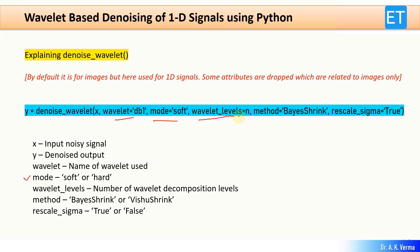The wavelet_levels parameter defines the number of decomposition levels — for example, if you set n equal to 3, there will be three decomposition levels of the discrete wavelet transform. The method parameter, which defaults to BayesShrink, is used for threshold and noise estimation; you can specify either BayesShrink or VisuShrink. Finally, rescale_sigma should be set to True for one-dimensional signals, as it rescales the noise variance sigma when the signal is internally rescaled.